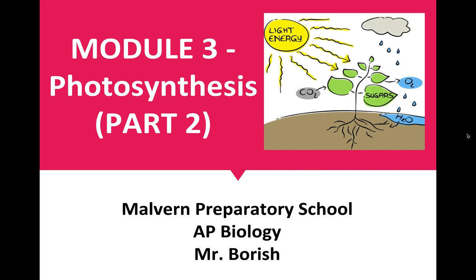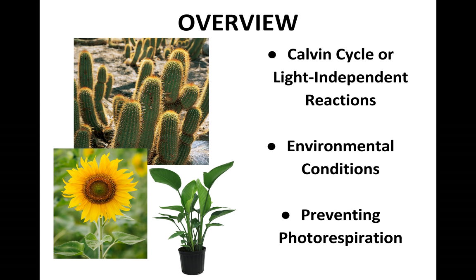Hello everyone, this is part two of the photosynthesis series. In this video we are going to talk about the Calvin Cycle, or as I like to refer to them, the light-independent reactions. We're also going to talk about the way that environmental conditions affect photosynthesis, how they affect the Calvin Cycle and sequestering CO2 from the environment, converting it into a carbohydrate. And the last thing we'll talk about is a few ways that plants have tricked the mechanism of converting CO2 into glucose into working better, as a result of a process that is pretty harmful to them called photorespiration.